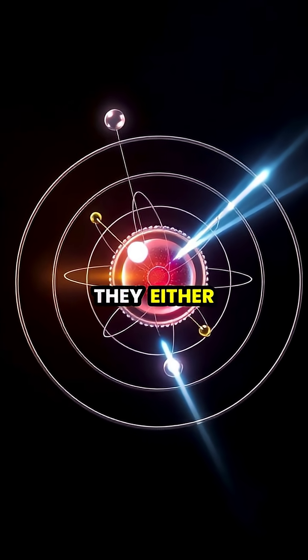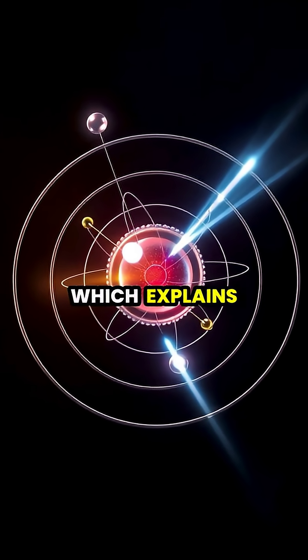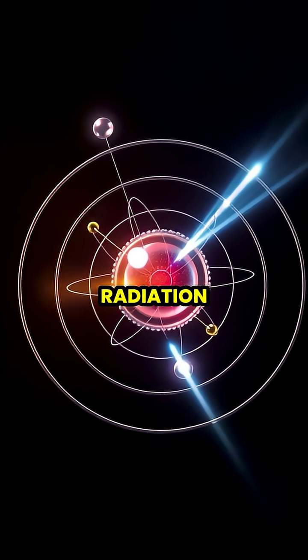When electrons move between energy levels, they either absorb or release energy, often in the form of light, which explains how atoms interact with radiation.